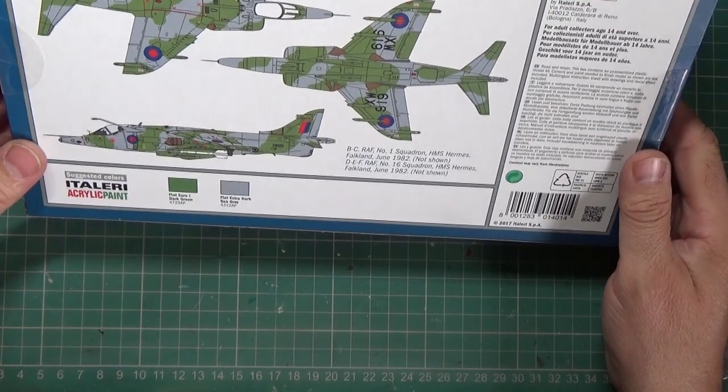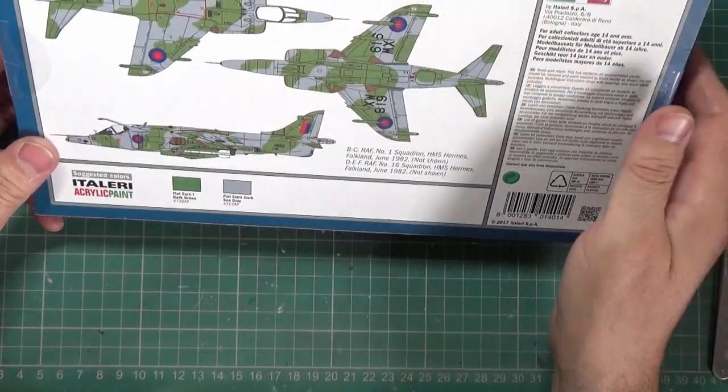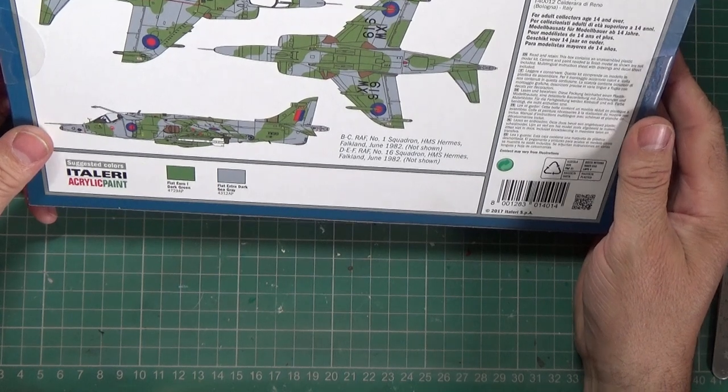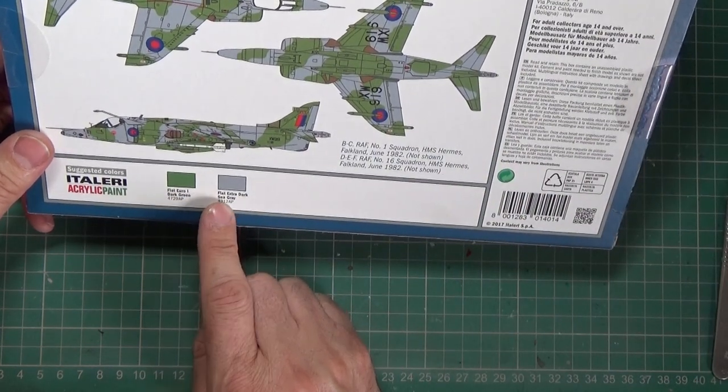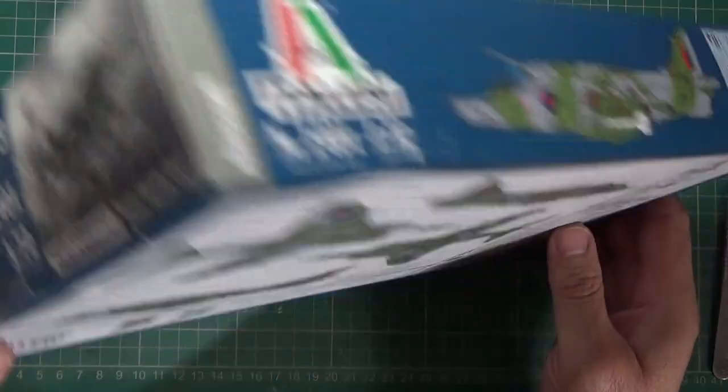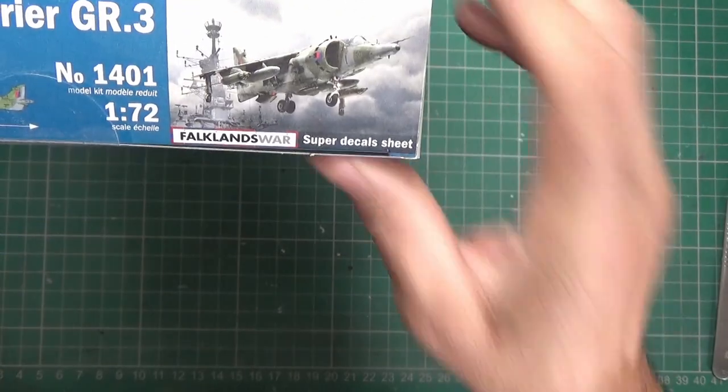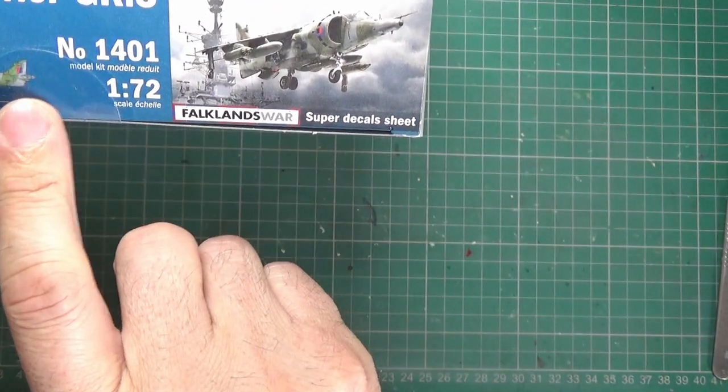There you go. I'm presuming this was the color of our aircraft back then, just two main colors: flat Euro dark green and flat extra dark sea grey.